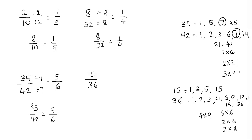You can stop after 12 and not write 18 and 36, because we're looking for the greatest common factor — a factor common to both numbers. Since the numerator is 15, it doesn't make sense to write factors greater than 15, because we won't be able to find a common factor there. We can see that the greatest factor common to both is 3.